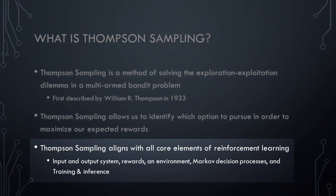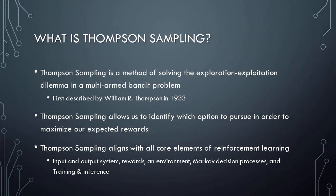If you recall from our last lesson, reinforcement learning systems contain five core elements: an input and output system, rewards, an environment, Markov decision processes, and training and inference modes. The Thompson Sampling framework aligns with all of these core elements of reinforcement learning, which means that it can be used as an excellent foundation for reinforcement learning-based artificial intelligence systems.